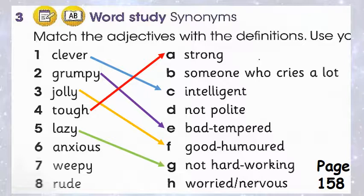Number six: Anxious, worried or nervous. Number seven: Weepy, someone who cries a lot. Number eight: Rude, not polite.